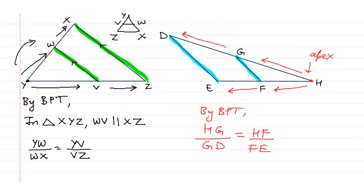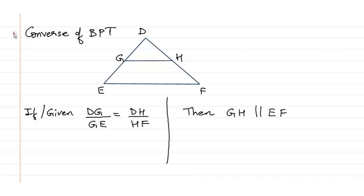The next theorem is the converse of the Basic Proportionality Theorem — it is just the opposite. So if we are given that DG upon GE is equal to DH upon HF, this is what is known to us. Then by the converse of BPT, we can say that GH is parallel to EF.